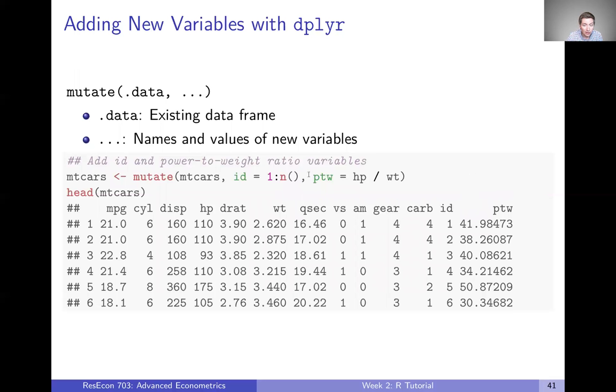By adding id, which is one through n, the number n here is going to pull out the number of rows in the data frame, and ptw equals hp divided by wt. Notice we don't have to keep putting mtcars in front of everything. We've already told it inside the function, everything we're doing is inside the mtcars data frame. So we don't have to keep referring to mtcars over and over again.